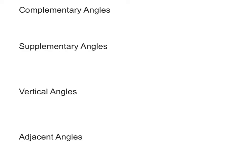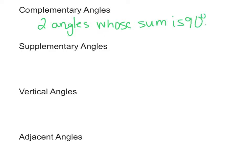Complementary angles are two angles whose sum is 90 degrees. So that means the two angles add up to 90 degrees. If you look at a picture like this, if this is a 90 degree angle in here and there was a line coming here, angles 1 and angle 2 would be complementary because they would add up to 90 degrees.